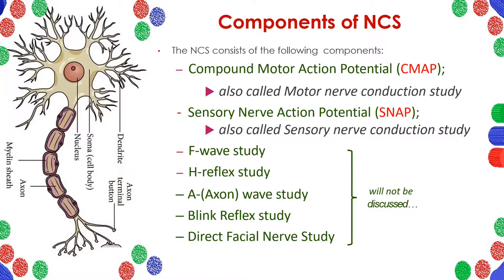As mentioned earlier, most doctors say NCV rather than NCS because nerve conduction velocity is the most important component of nerve conduction studies — but not the only one. The first component is compound motor action potential (CMAP), also known as motor nerve conduction study, and sensory nerve action potential (SNAP), also called sensory nerve conduction study. Both motor and sensory components are included in NCV. The remaining components — F wave study, H reflex study, axone wave study, blink reflex study, and direct facial nerve studies — are also part of NCS but will not be discussed here due to time limitations.